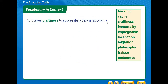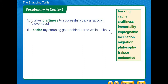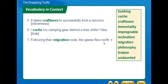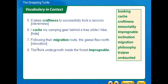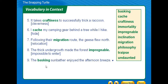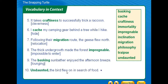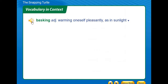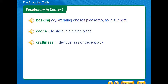I have no 'inclination' to go indoors when it's nice outside — inclination means desire. We take 'craftiness' to successfully trick a raccoon — meaning clever deception. I cache my camping gear behind the tree while I hike — 'cache' means hiding place or to store in a hiding place. Following their migration route, the geese flew north — 'migration' means relocation. The thick undergrowth made the forest 'impregnable' — impossible to enter.